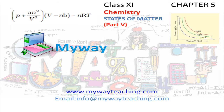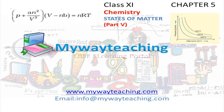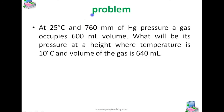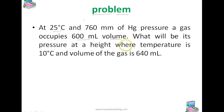This video is brought to you by mywayteaching.com. The next problem: at 25 degrees Celsius and 160 millimeters of Hg pressure, a gas occupies a 600 milliliter volume. What will be its pressure at a height where the temperature is 10 degrees Celsius and the volume of the gas is 640 milliliters?